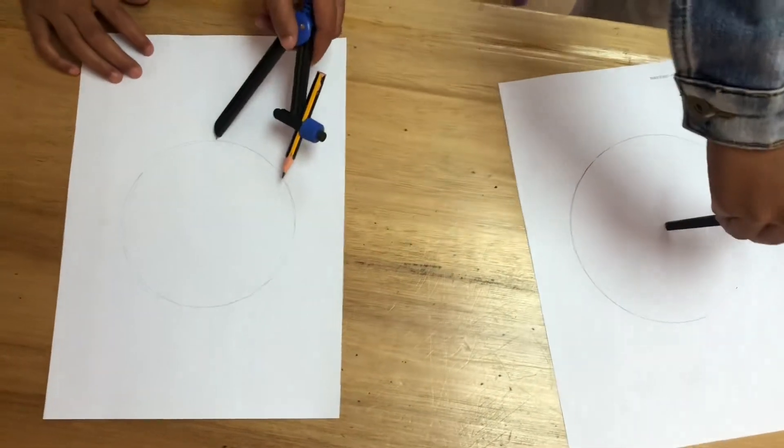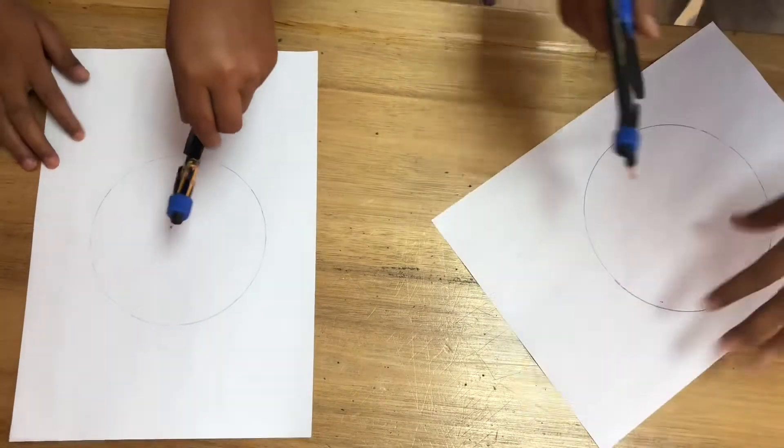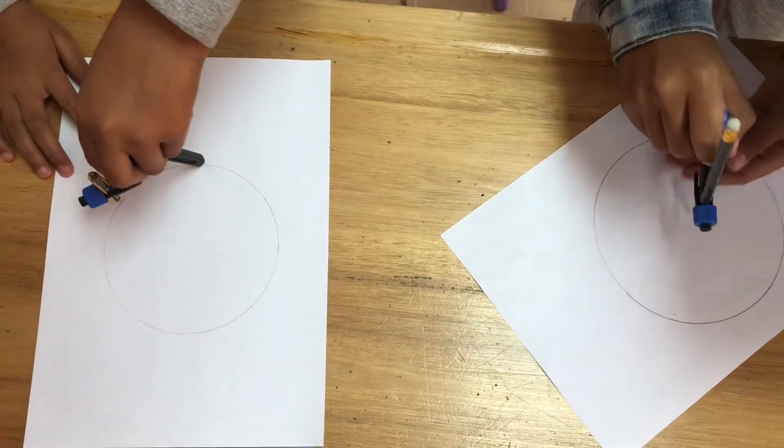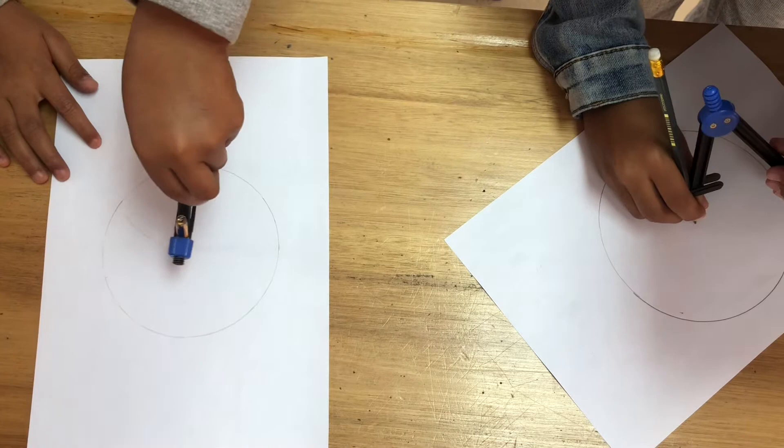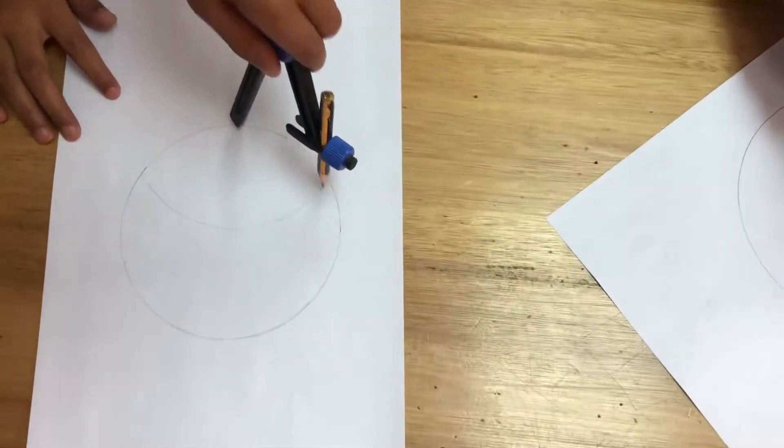And then you choose any point of the circle circumference. Yeah. And then you draw like a line going through the center. Okay. Like that. All the way to the other side. Yes. Okay.